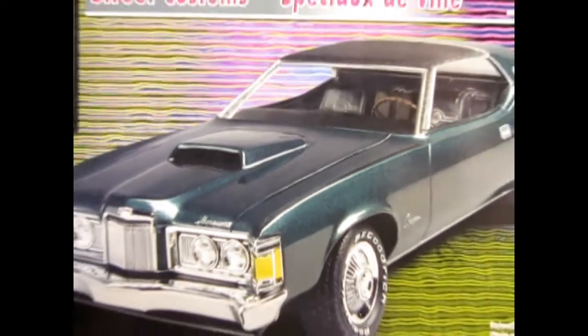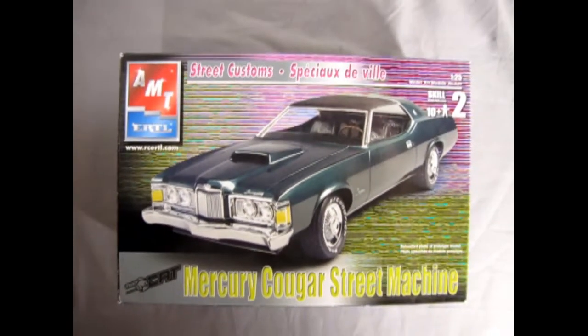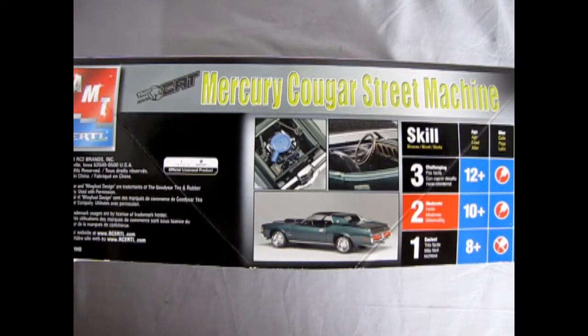And now we get to go all the way back to our Mercury dealer as we get to check out the Mercury Cougar Street Machine by AMT Ertl. This Mercury Cougar Street Machine is a skill level 2 kit for ages 10 and up. It does require paint and glue, and as you can see it's got a great engine under the hood as well as an interior, and the tail light profile is excellent.